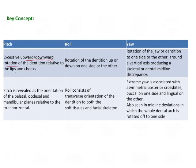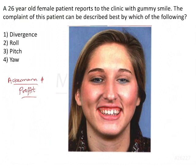To summarize: up-and-down rotation related to the lips and cheeks is pitch; up-and-down rotation on one side is roll; and side-to-side rotation of the jaw along a vertical axis is yaw, which also results in asymmetric posterior crossbites. For this clinical case showing a gummy smile with no midline deviation or side asymmetry, the answer is pitch.